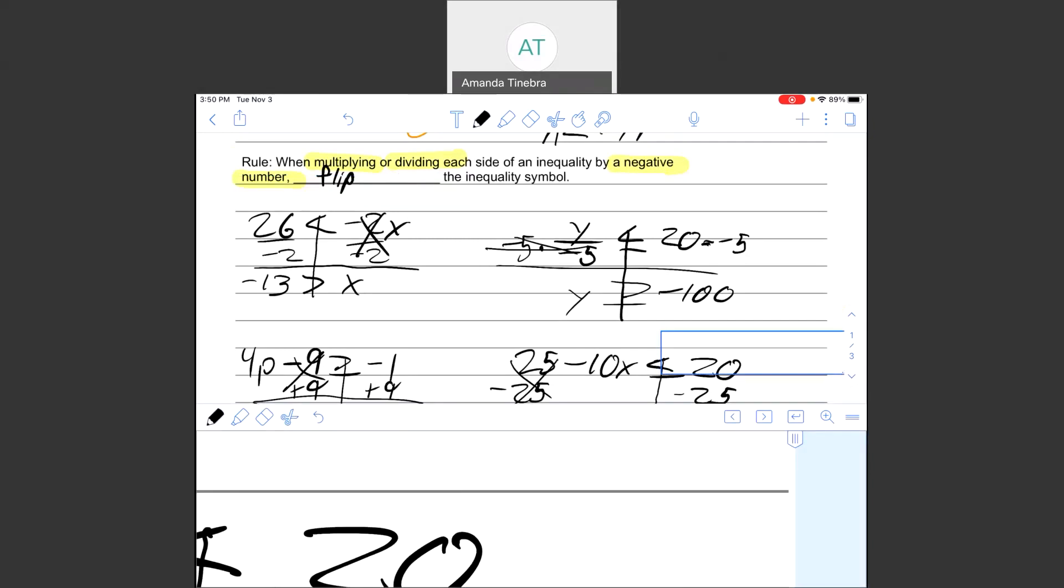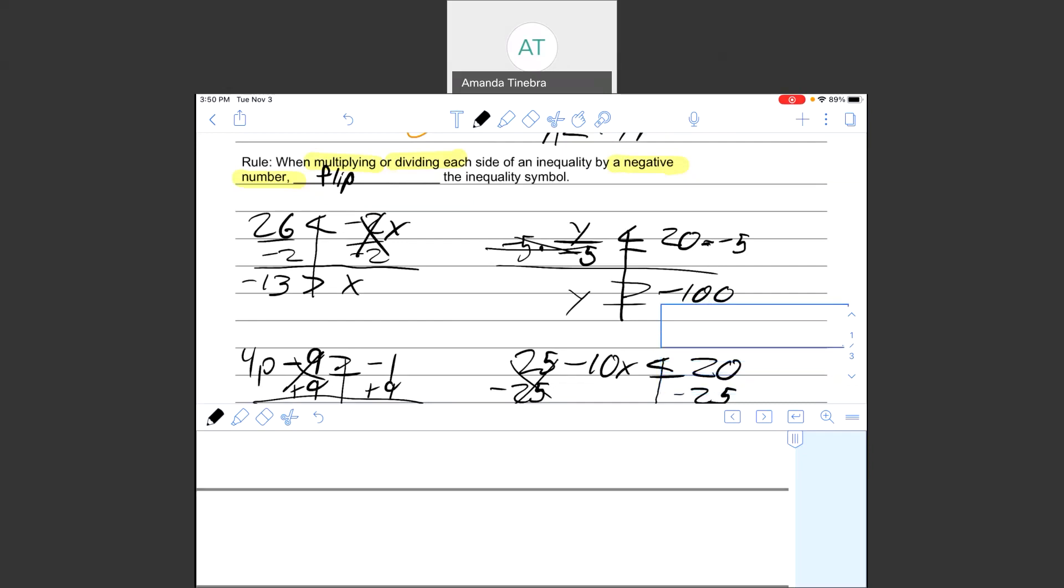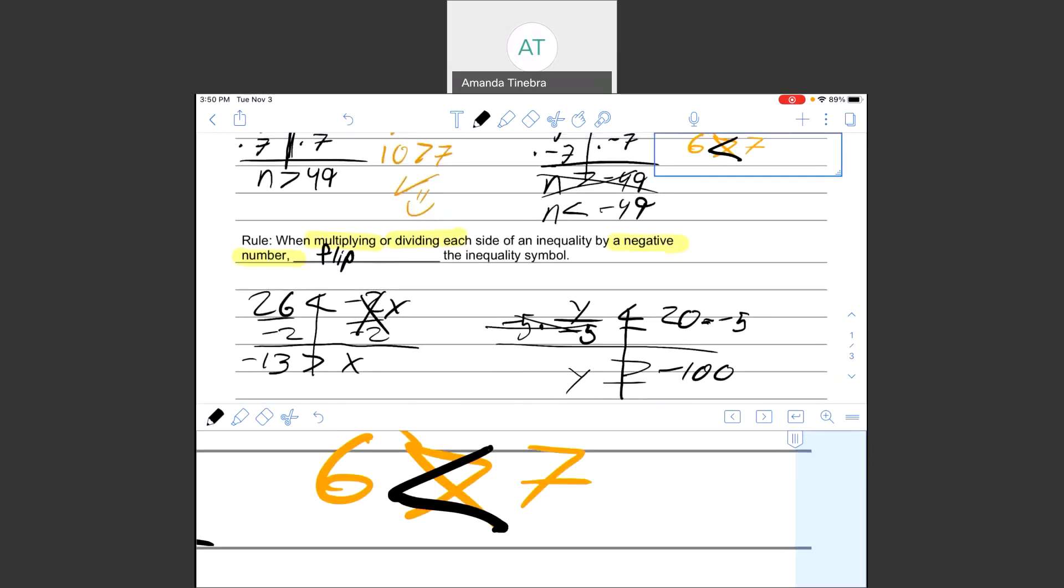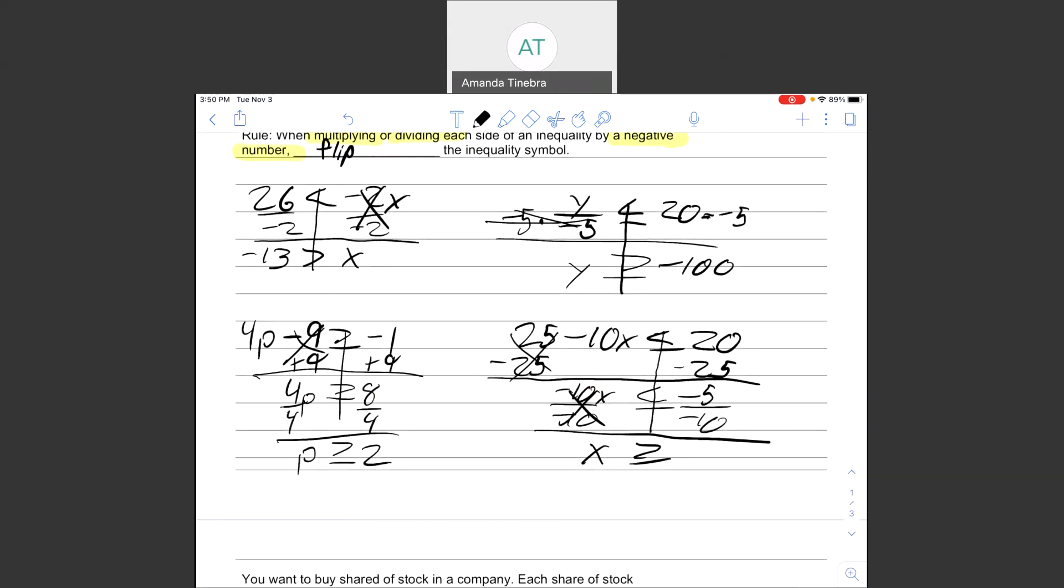Then I have x and negative 5 divided by negative 10. Negative 5 divided by negative 10 is 1 half or 0.5 if you did that on your calculator.